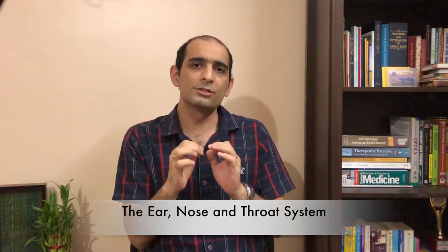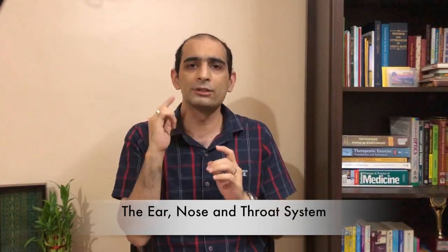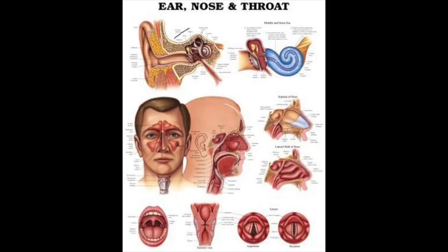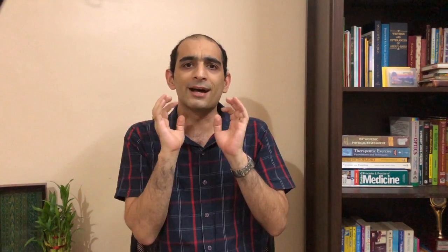Let's look at how the conditions of the ear, nose and throat system can affect the eyes. The nasal passages are situated close to the eyes and have actual connections between each other, and hence ear, nose and throat conditions do produce certain ocular signs and symptoms. The most common is allergic rhinitis or hay fever, which has a conjunctival component and results in red, watery and itchy eyes.